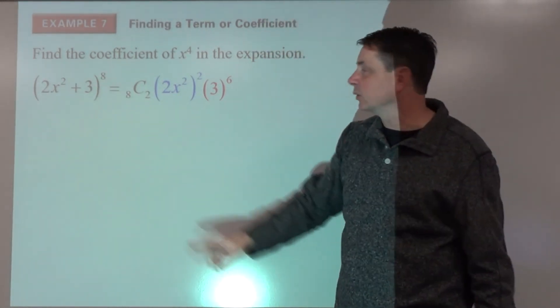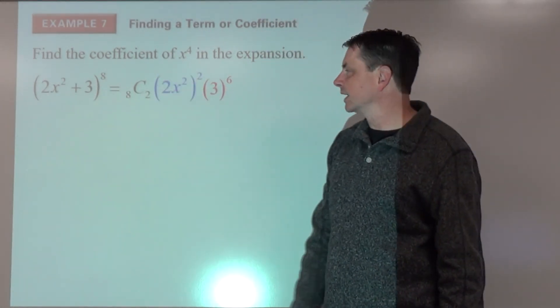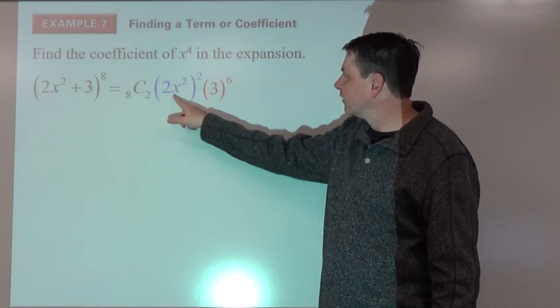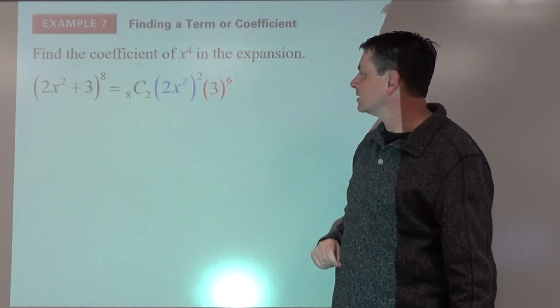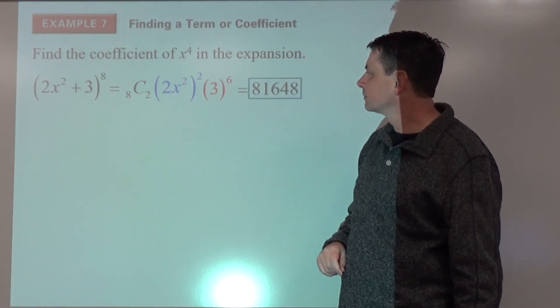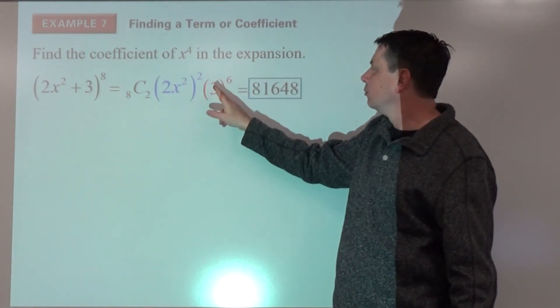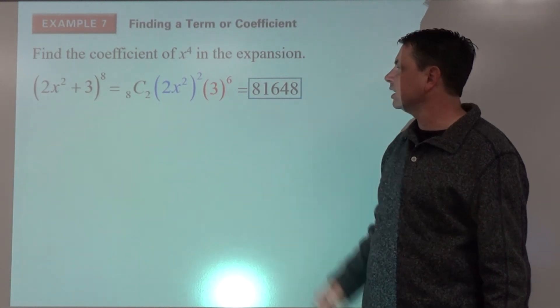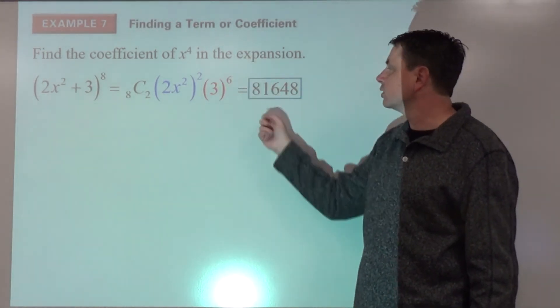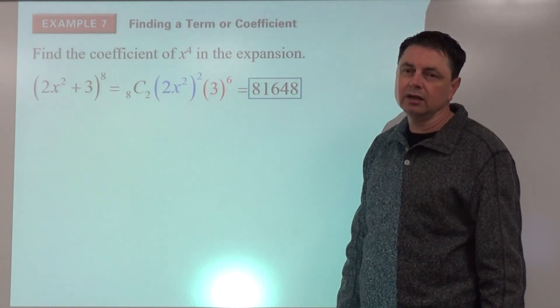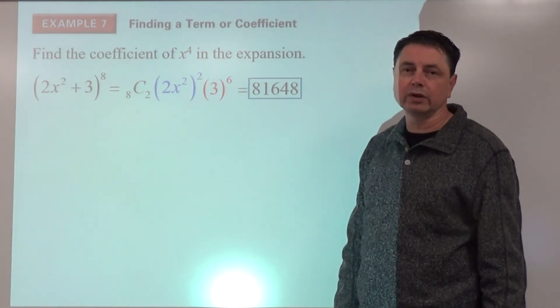So now we can evaluate. Do 8 choose 2 on the calculator. We're going to have to square this, we're going to have to raise that to the sixth power. If we multiply that by 2 squared by 3 to the sixth, we're going to get our coefficient. That's all that we're looking for is the coefficient: 81,648.